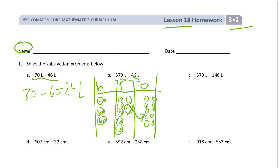Unbundling gives us ten ones. Now we can subtract. We need to subtract four tens and six ones — that's these five ones right here and that one. And you can see what we have left: we have three hundred twenty-four liters.